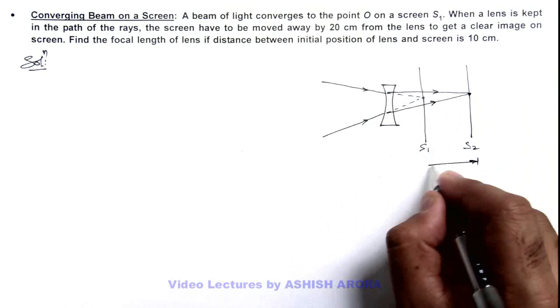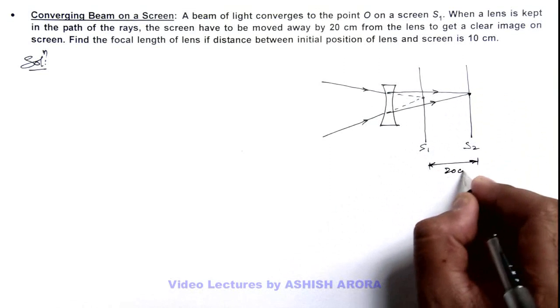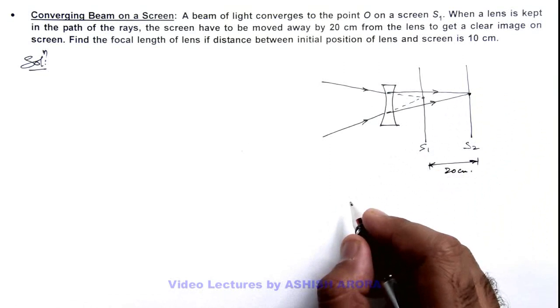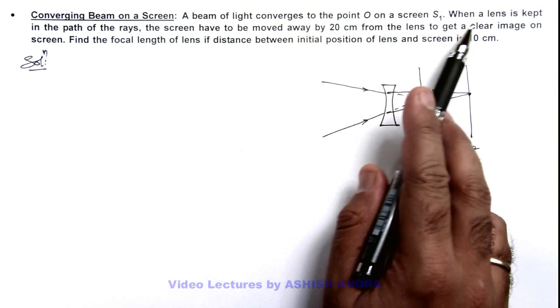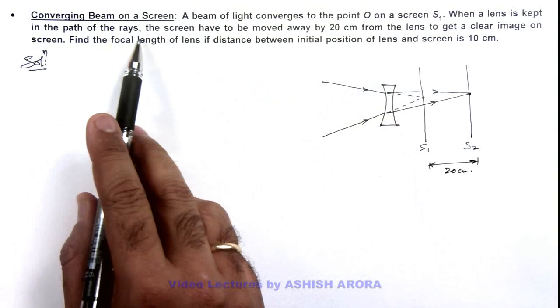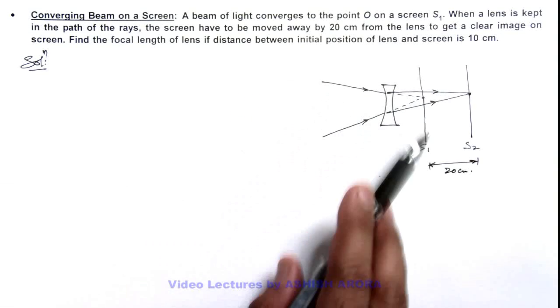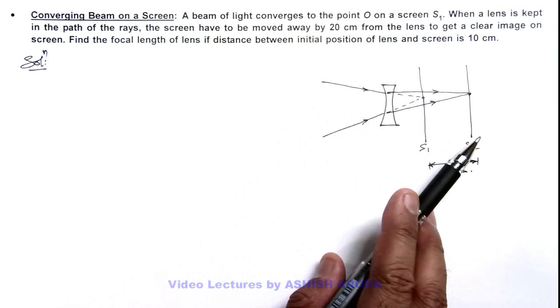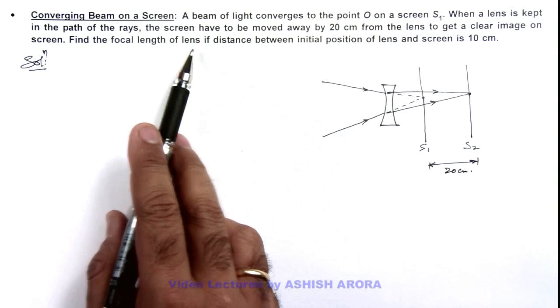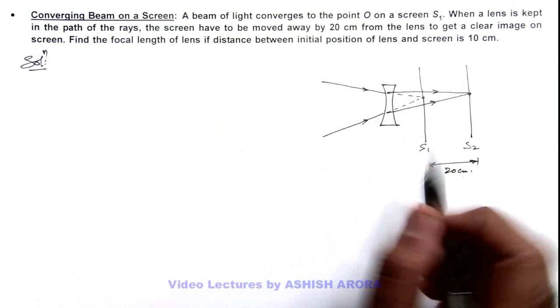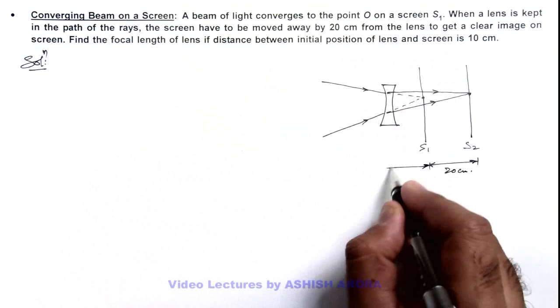The screen is moved 20 centimeters away from the initial position. The initial distance between the lens position and screen is 10 centimeters.